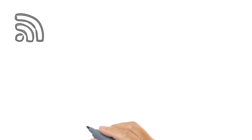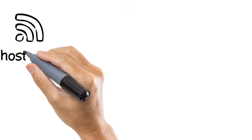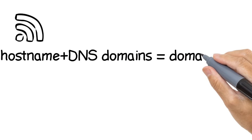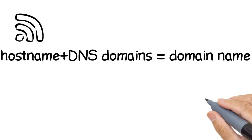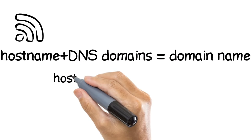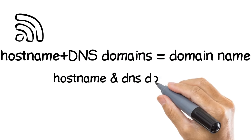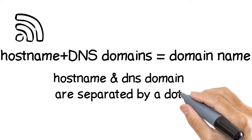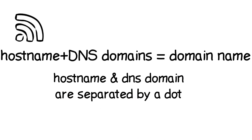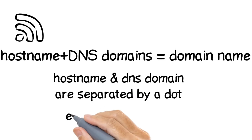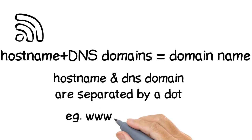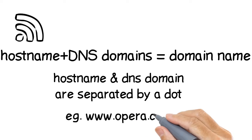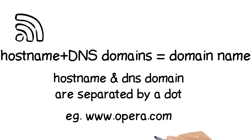On the internet, hostnames are appended with DNS domains to form domain names. The hostnames and DNS domains are always separated with a dot. For example, www.opera.com.